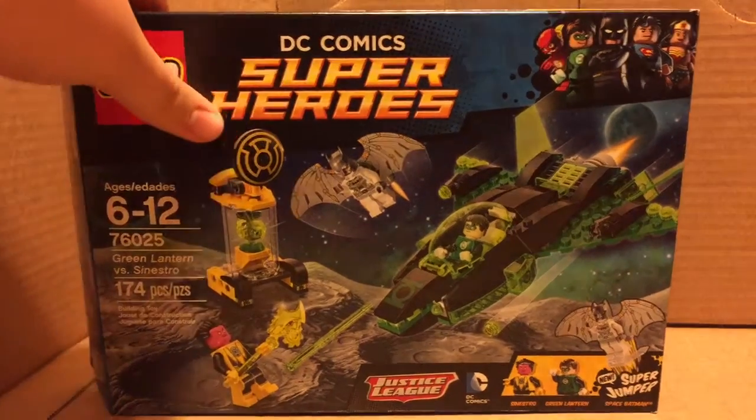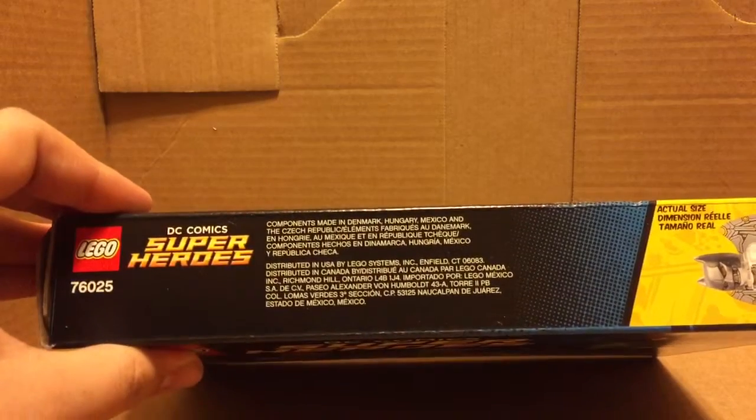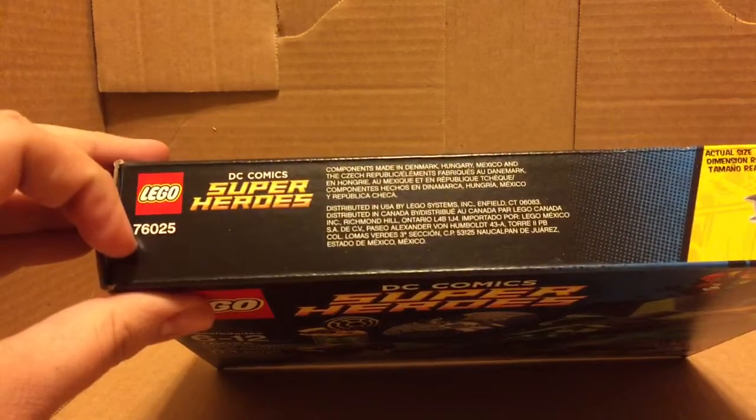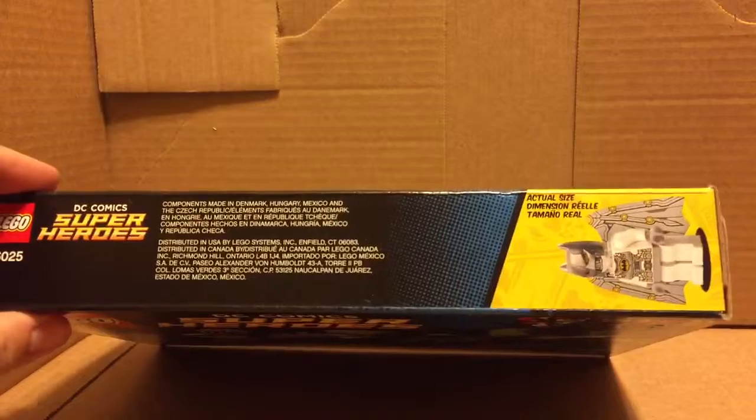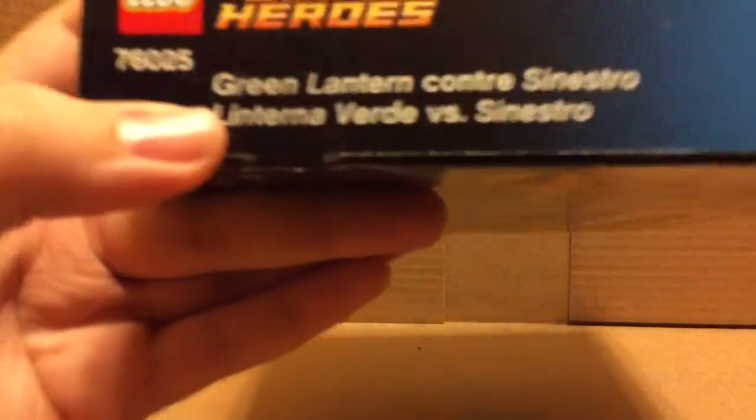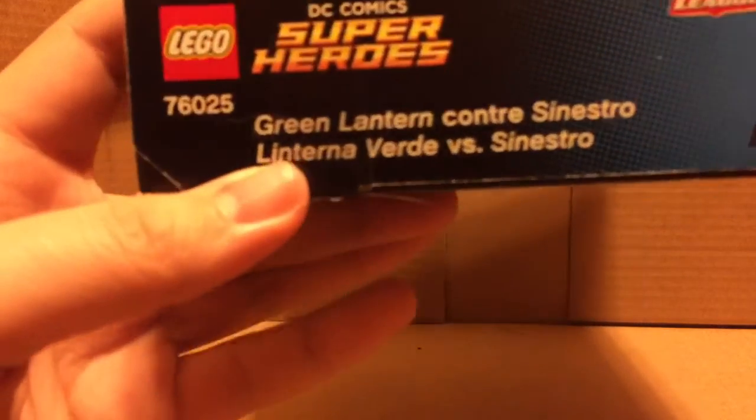On the top of the box, it tells you that the components were made in Denmark, Hungary, Mexico, and the Czech Republic. Again, it tells you the product number. It shows you the actual size of the minifigures. On this side, it tells you about the Super Jumper and the LEGO Club. On this side, it tells you the name of the set in two other languages. On the bottom, you get all your rights and stuff.